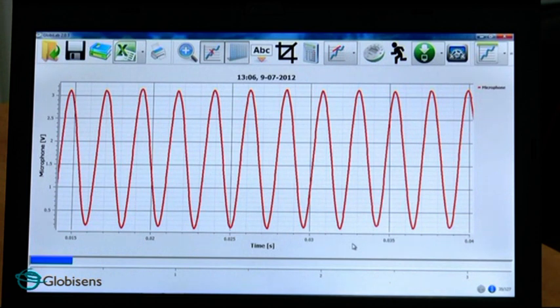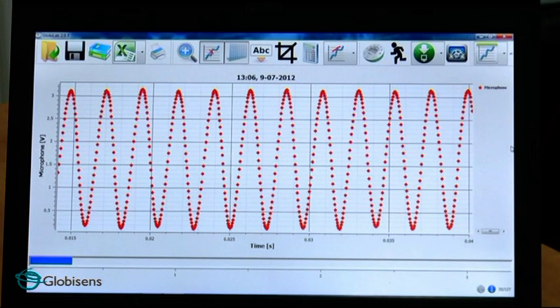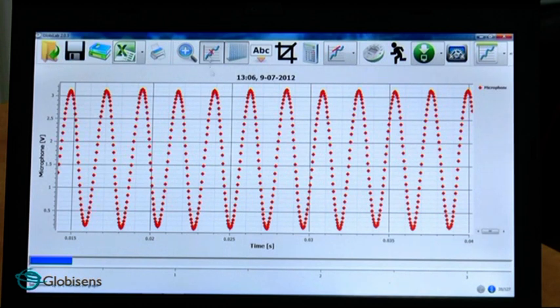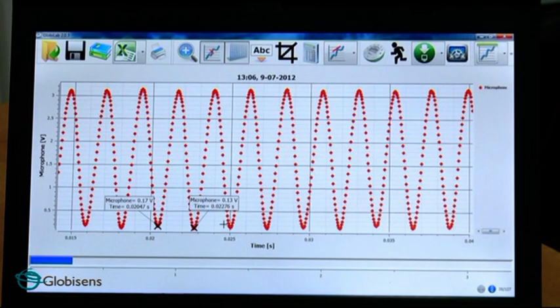Now let's analyze the data we have collected. We can first see the samples. We can place two markers on the graph at the beginning and end of an oscillation cycle. Using these two markers, we can calculate the period and frequency of the wave.